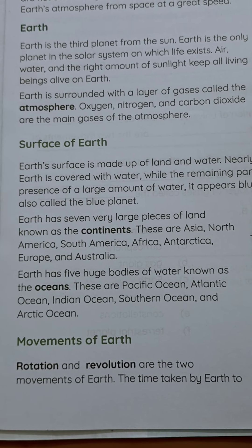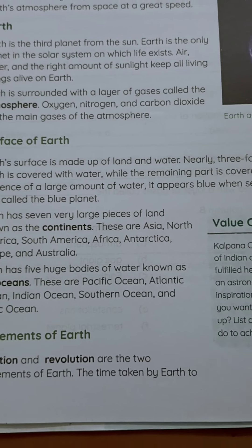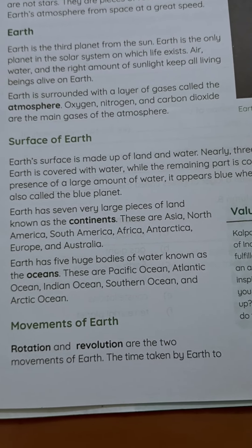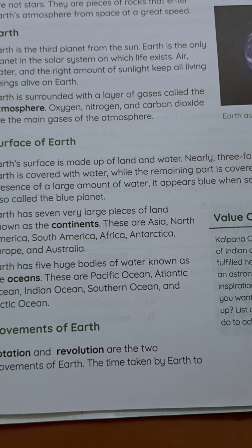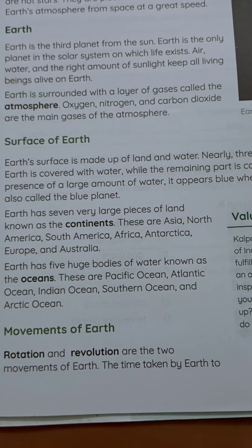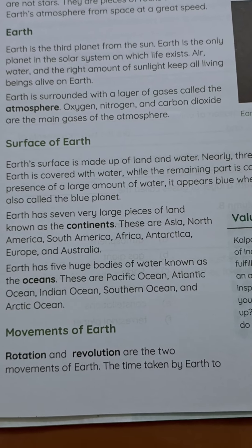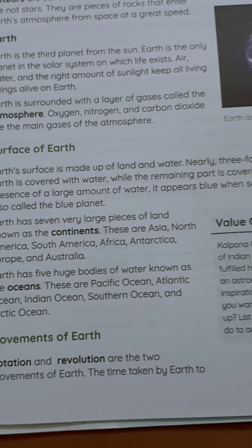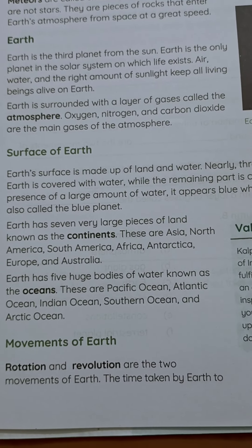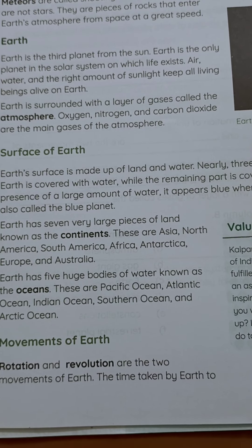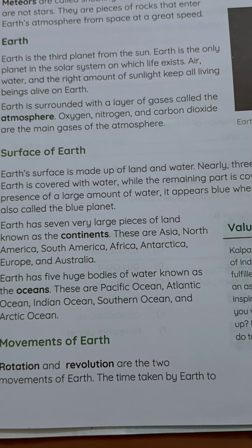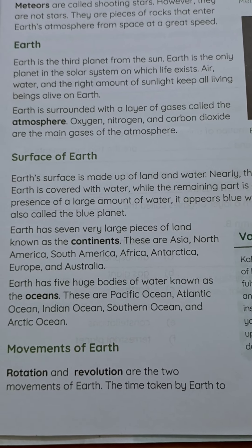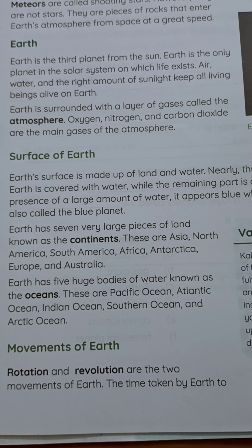Surface of the Earth: Earth's surface is made up of land and water. Nearly three-fourths of the surface of the Earth is covered by water. The Earth is called the blue planet because it appears blue in color. If you see the Earth from space, it appears blue. So it is called the blue planet.